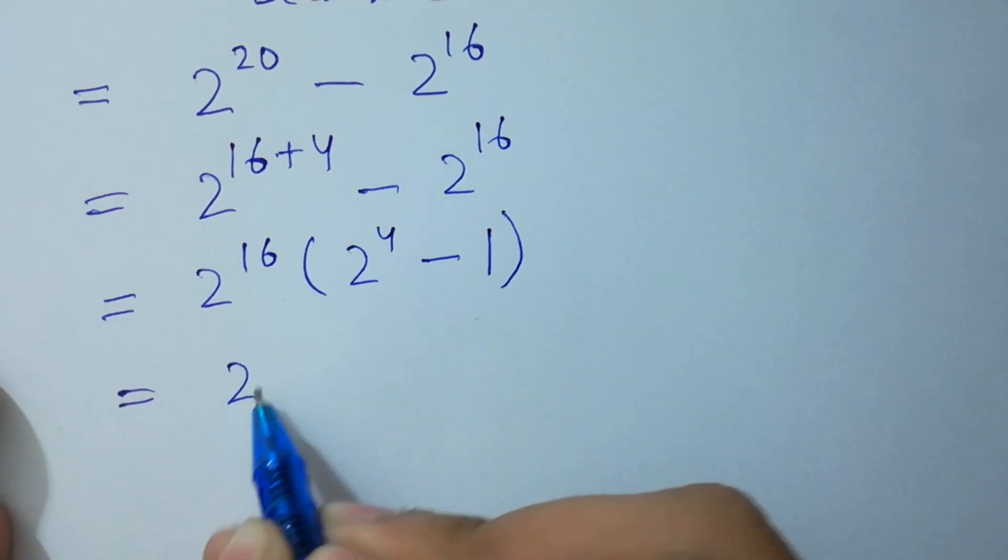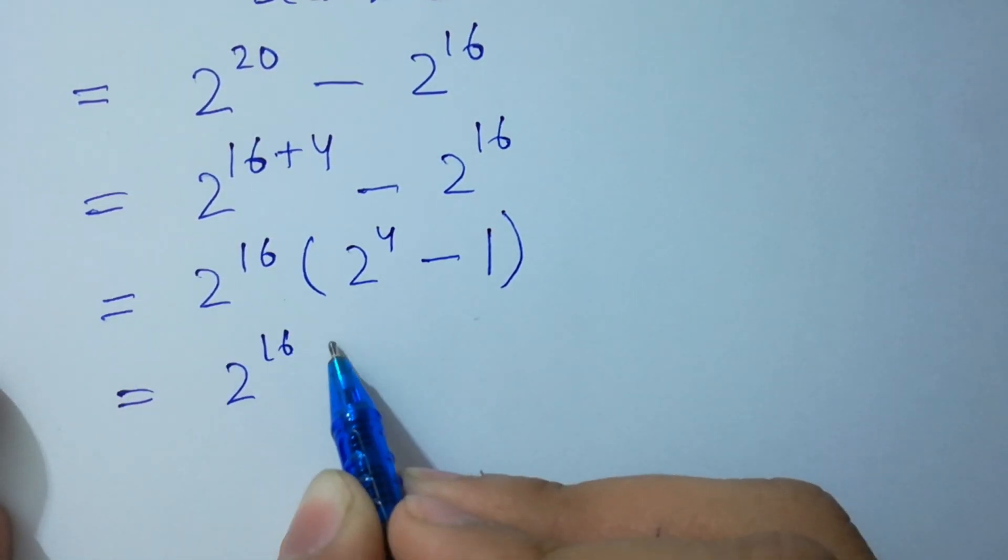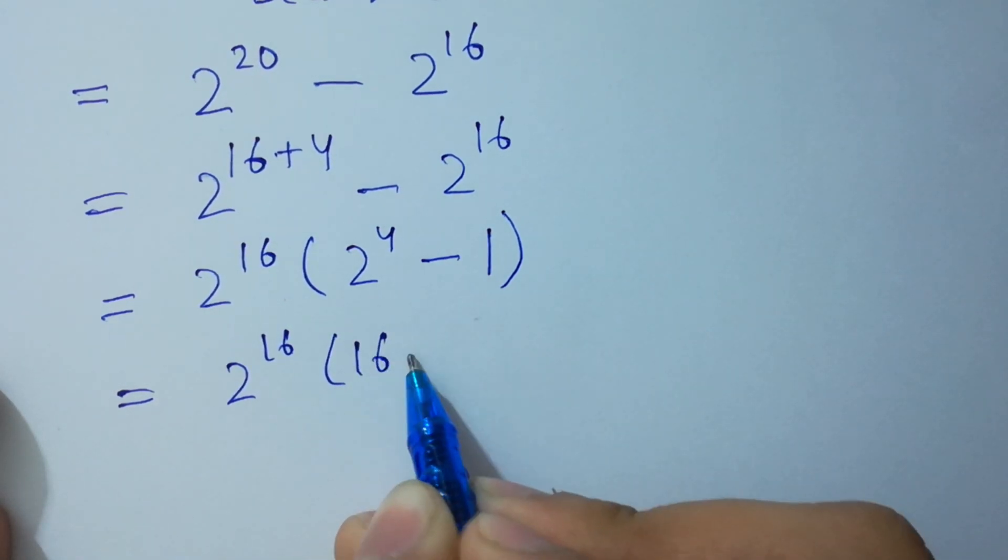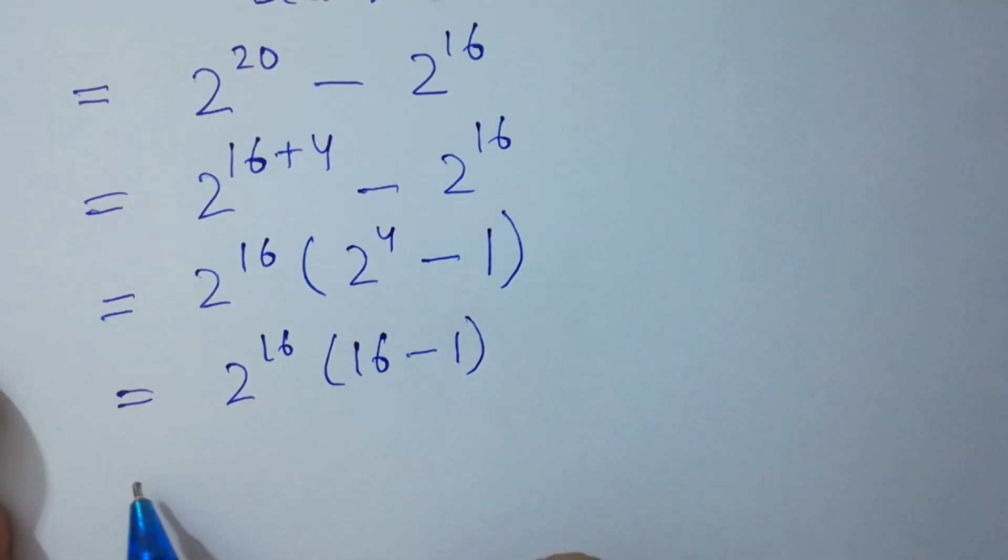Next step: 2^16 times (2^4 - 1). Since 2^4 equals 16, we get 16 - 1 = 15. Very easy.